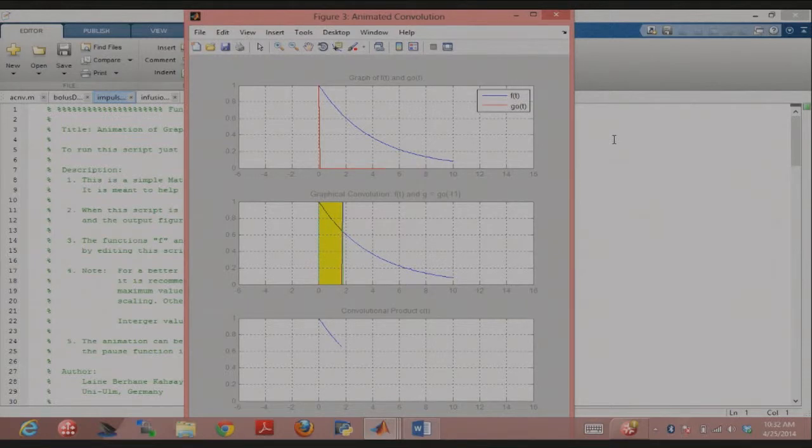Think of it this way: the integral of a delta at some point with the function f is equal to f of ti. I'm getting the value of the function back. I'm sliding the delta function across and getting the value of the function at every point. Every convolution gives me one value of the function at every point.